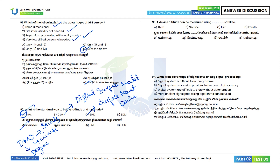The correct answer is option D — DMS. Question 93: Device altitude can be measured using the fourth satellite. Option D is the correct answer.